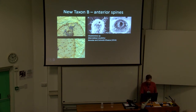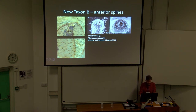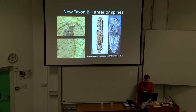We can also see anterior spines that are possibly accessory feeding structures, also seen in extant gastrotricha. This is a freshwater species — Chaetonotus — with a mouth basket, and here is a marine species with cuticularizations surrounding the mouth. These specialized spines surrounding the mouth are seen in a number of different gastrotricha.